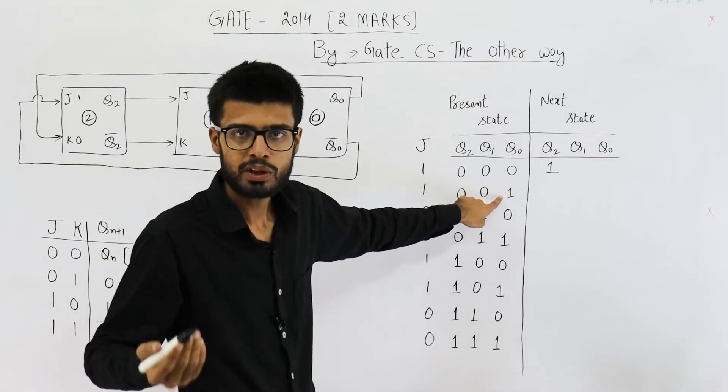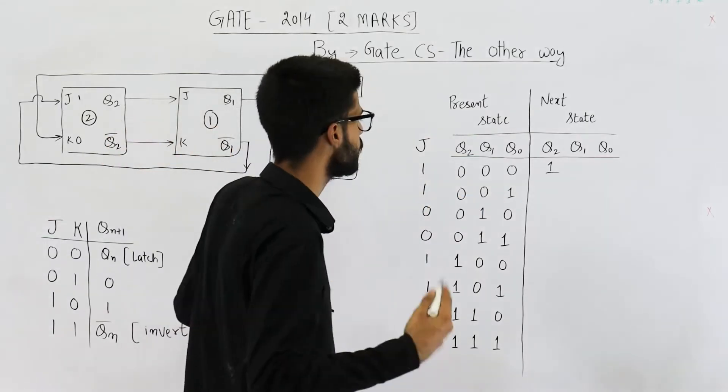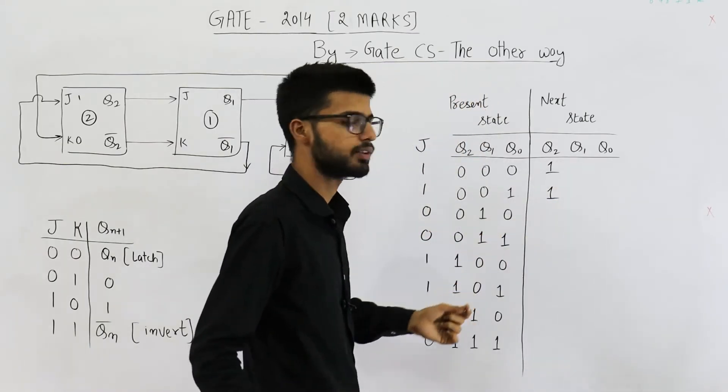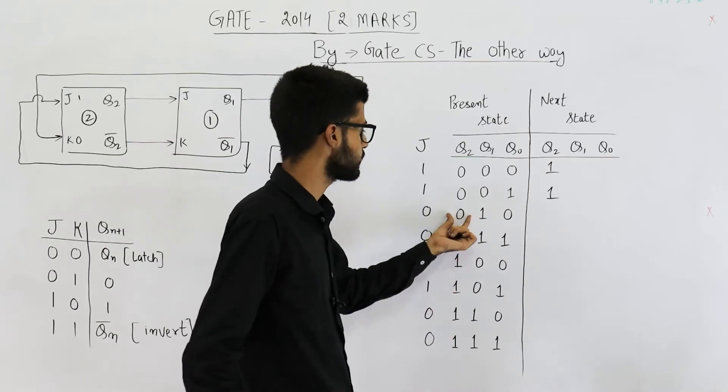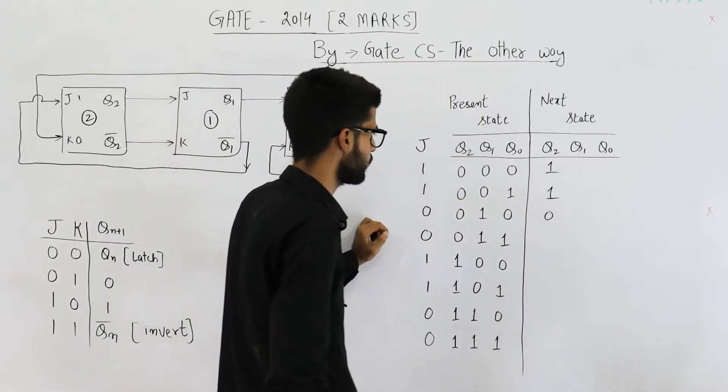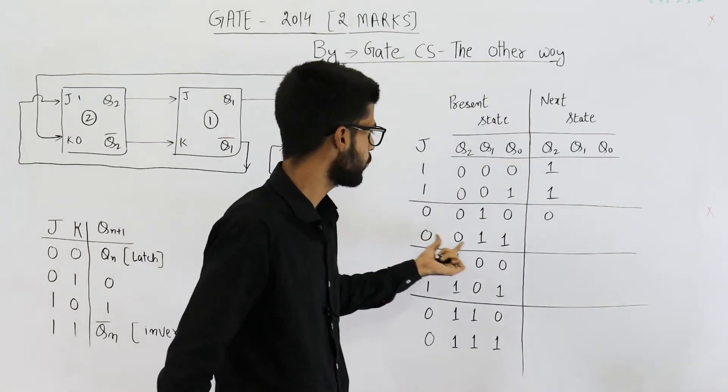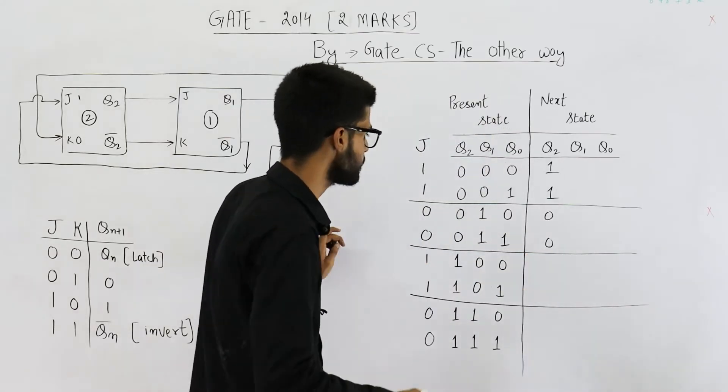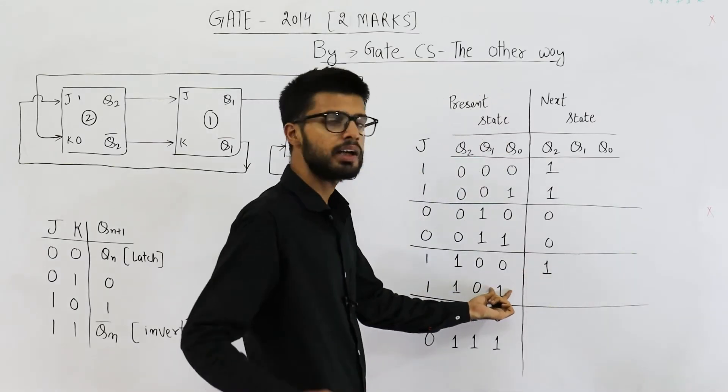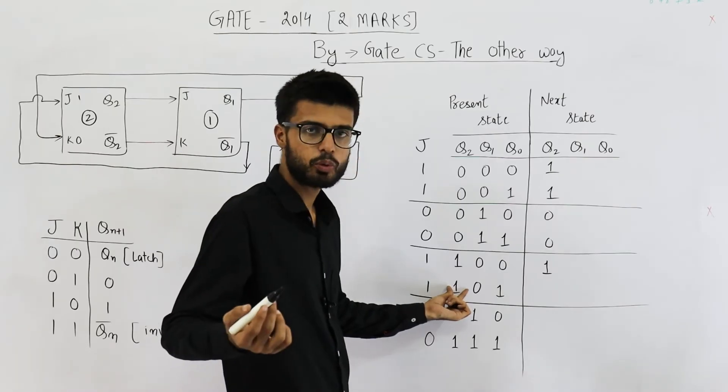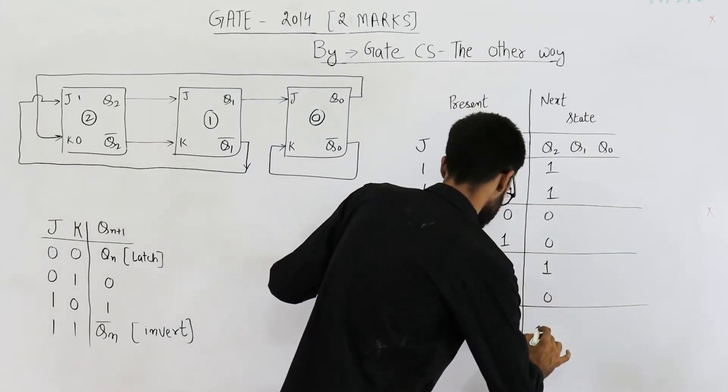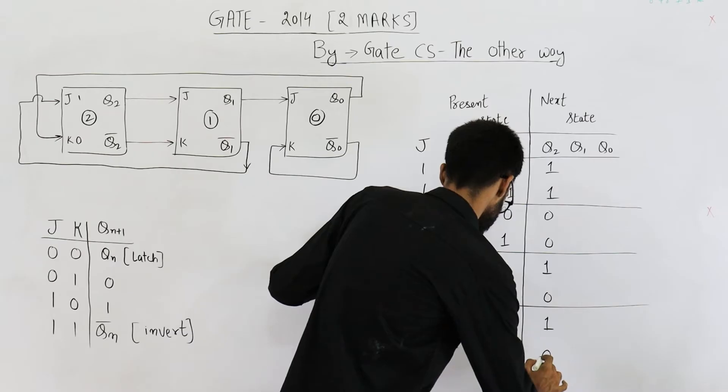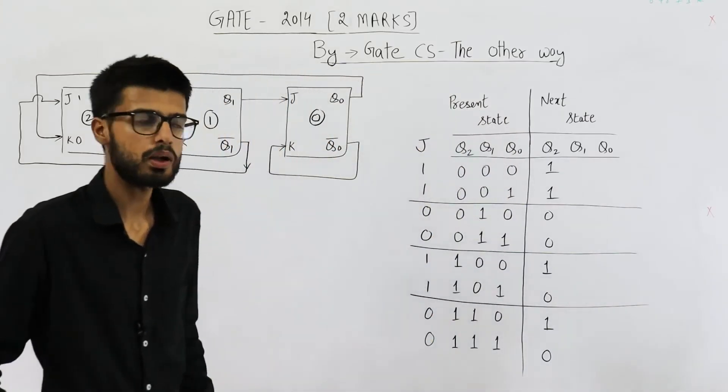So this is for flip-flop 2, the output is 1. 1,1 means invert. Whatever is the current output of this flip-flop, invert it. Its current output is 0. Invert it and get 1. 0,0 means latch. Whatever is the current output, keep it as it is. Currently we have 0, keep it as it is. Now you have 0,1. 0,1 means reset. The output will be 0. This is 1,0. 1,0 means set. The output will be 1. 1,1 means invert. So currently we are having the output is equal to 1. Invert it to get a 0.